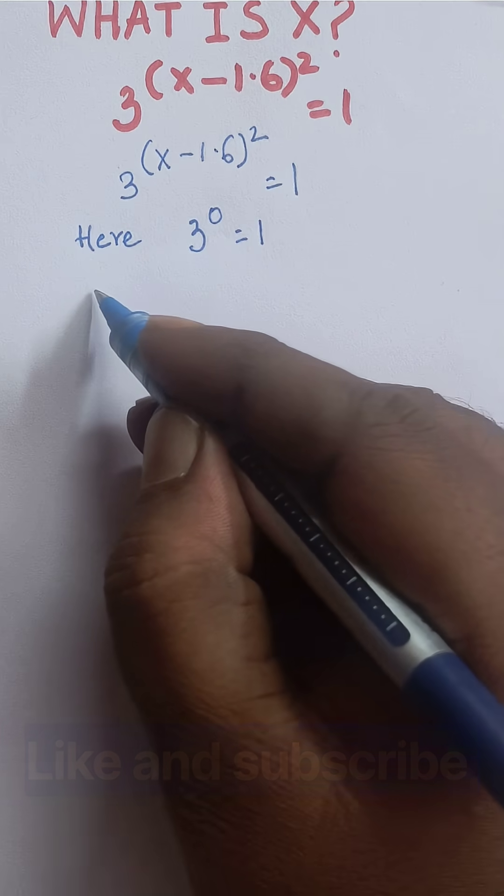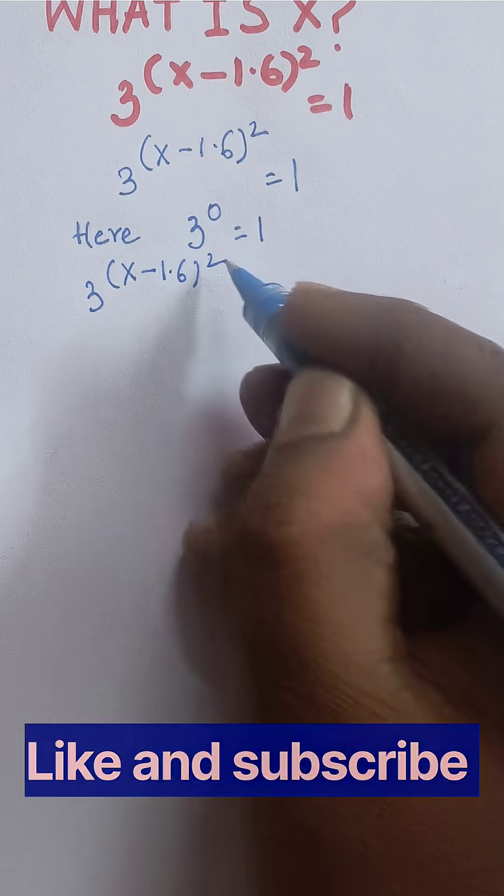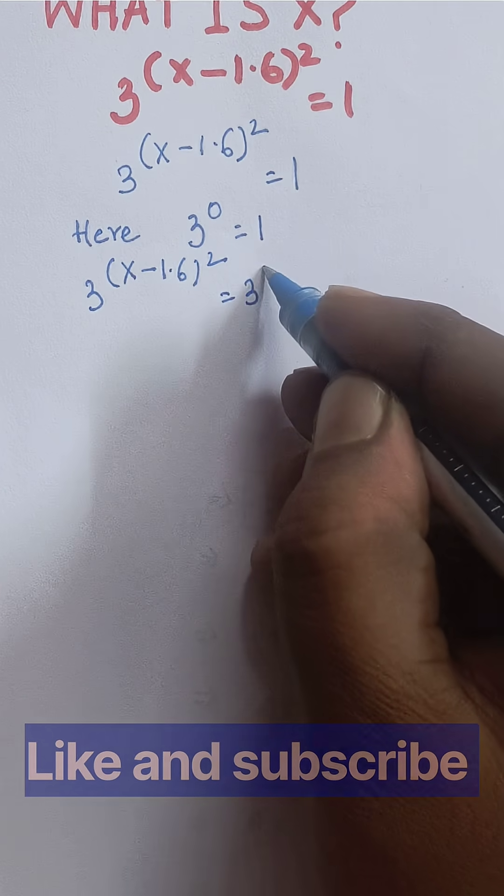So after putting this value, the expression becomes 3 raised to (x minus 1.6) whole square is equal to 3 raised to 0.